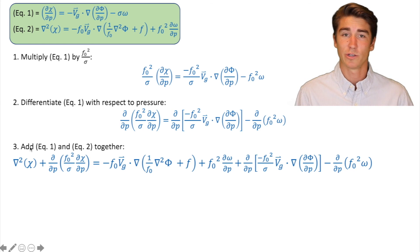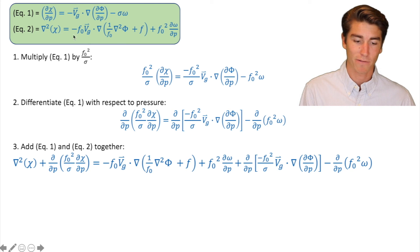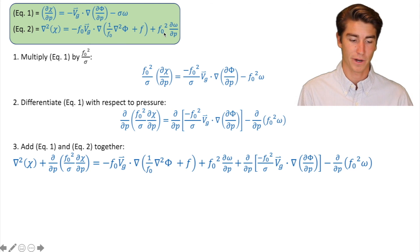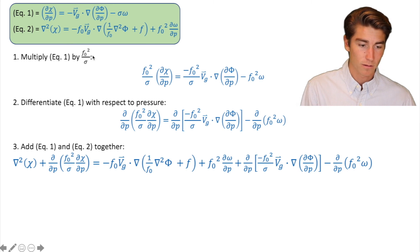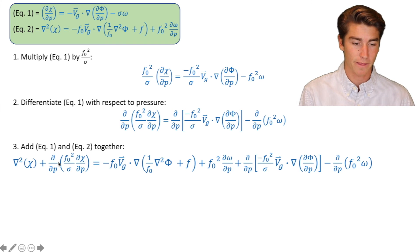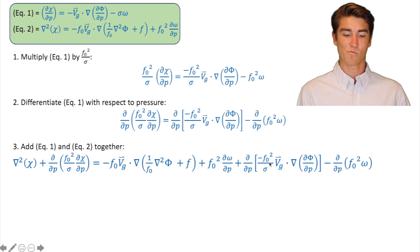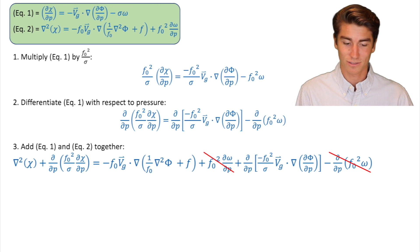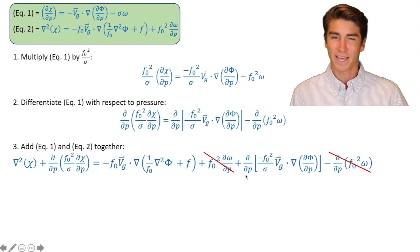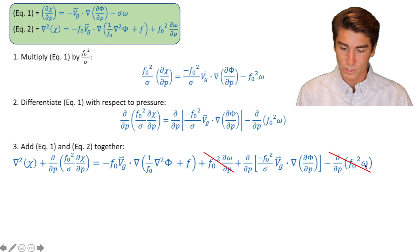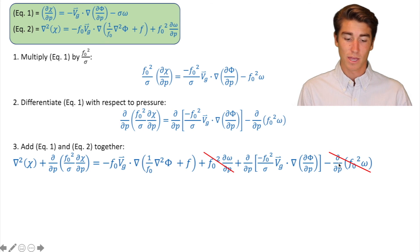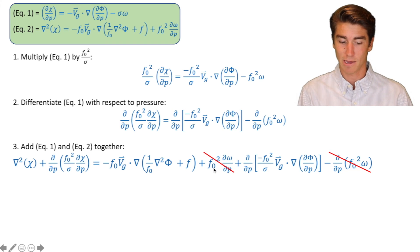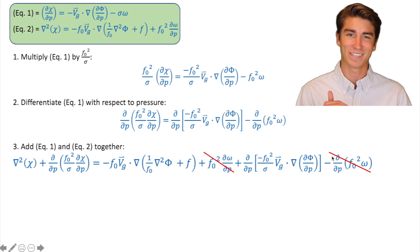Next up, we're going to add equation one and equation two together. You see the left-hand side becomes the combined left-hand side when they're added together, and the right-hand side is this whole collection of terms. But luckily there are going to be a couple of cancellations. They look a little different at first, but if you distribute that omega into the d/dp, you see that they're actually the exact same thing, except one of them is negative, so we can cancel it out.